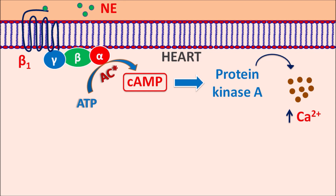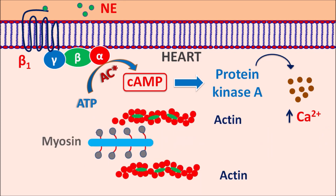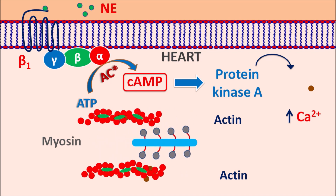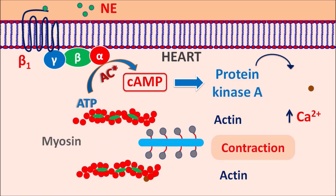Protein kinase A phosphorylates ion channels such that intracellular calcium levels are increased — either by increasing the release of calcium from the sarcoplasmic reticulum or by increasing calcium entry into the cardiac muscle. The increased calcium binds to troponin, removing its inhibitory block, allowing actin filaments to slide on myosin and produce contraction of the cardiac muscle. In this way, norepinephrine produces cardiac muscle contraction by increasing cyclic AMP activity.